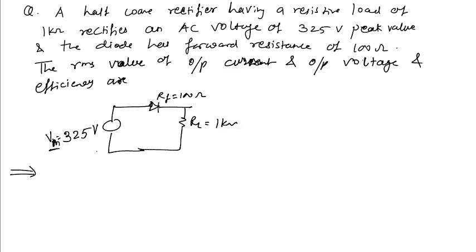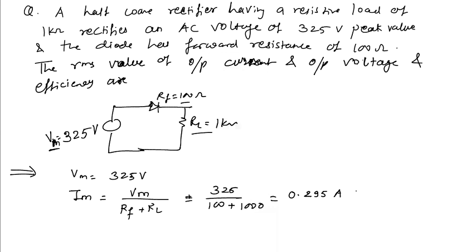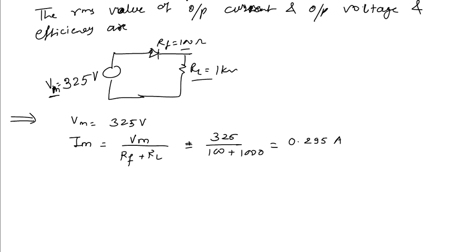First we know that the maximum voltage Vm is equal to 325 volts. The diode resistance and the load resistance are given. Now in the circuit, the maximum current can be calculated dividing the maximum voltage by the total resistance of the circuit, that is RF plus RL. So it will be 325 divided by 100 plus thousand, will be 0.295 amperes. So this is the maximum value of current in the circuit.